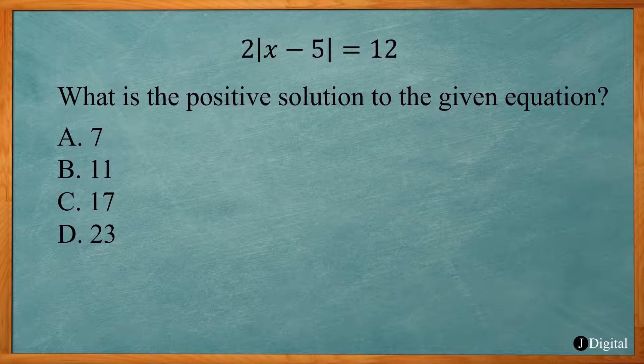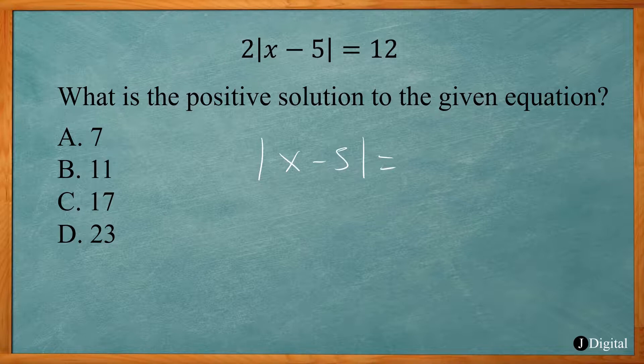Now this one is a little bit different. We have a 2 out front there. What we want to do is get the absolute value part by itself. So we're going to divide both sides by 2. That gives us absolute value of x minus 5 equals 12 divided by 2, which is 6.